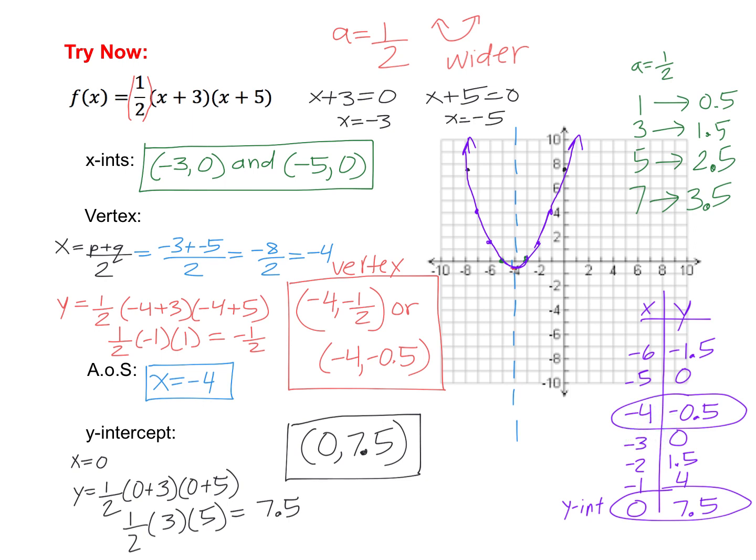But if you use the 1, 3, 5 pattern, you would just have to multiply by a half. And actually, since I can fit more, I actually did 1, 3, 5 and 7. You can see here if we go over 1, then up half, then over 1, up 1.5, then over 1, up 2.5, then over 1, up 3.5. Either way, you end up with the same graph and your y-intercept at 0, 7.5.